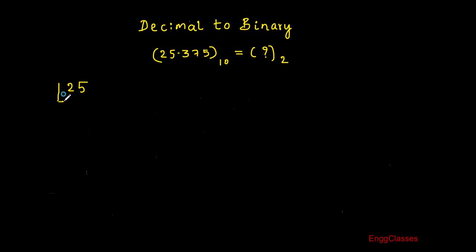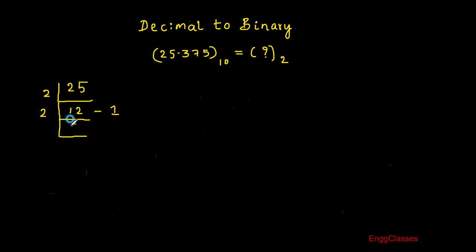Consider 25 and divide by 2. 2 twelves are 24, so the quotient is 12 and the remainder is 1. Divide 12 by 2: 2 sixes are 12, quotient is 6 and remainder is 0. Divide 6 by 2: 2 threes are 6, quotient is 3 and remainder is 0.